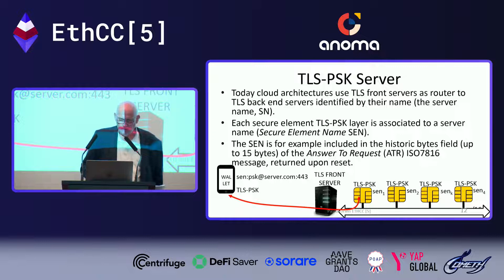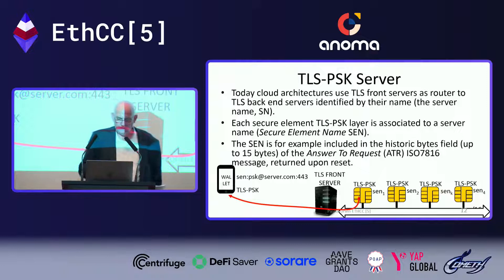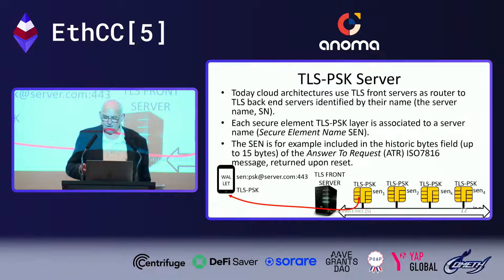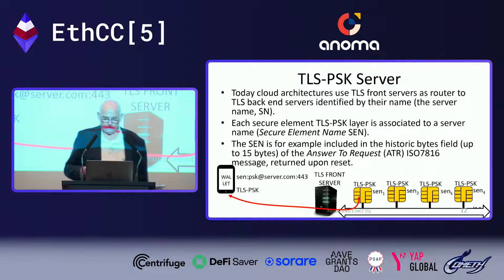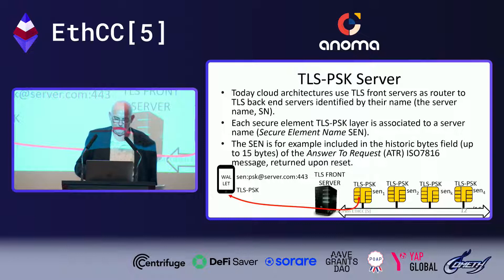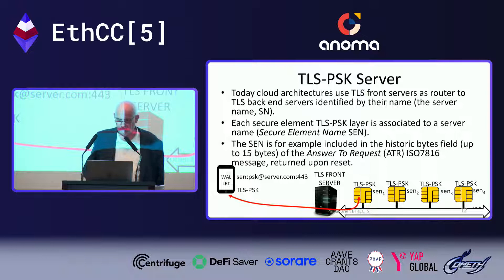About the TLS pre-shared key server: today, cloud architectures use a TLS front server as a router to TLS backend servers, identified by their Server Name (SN) — this is a very common feature in cloud architectures. Each secure element TLS PSK layer is associated to a server name called the Secure Element Name (SCN). The SCN is included, for example, in the historical bytes field — up to 15 bytes — of the Answer to Reset message of the ISO 7816 ATR. You can see a grid of TLS PSK secure elements identified by their server name, connected to a TLS front server acting as a router.